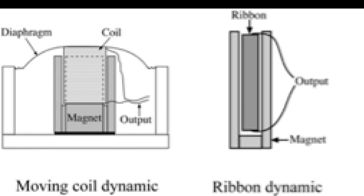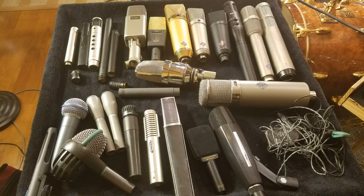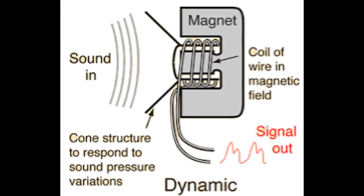Dynamic mics have two main types within them. One is called a moving coil type, the other is a ribbon mic. A moving coil dynamic microphone employs a coil of wire attached to a diaphragm, which is suspended in a magnetic field. When sound waves vibrate that diaphragm, the coil vibrates in the magnetic field and generates an electrical signal, similar to the incoming sound wave.